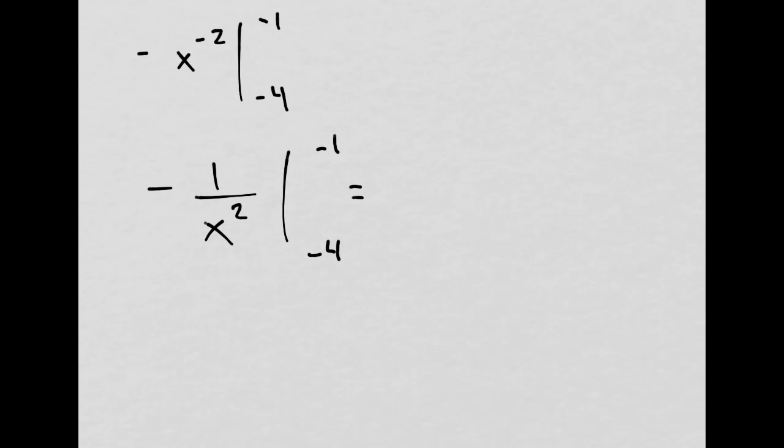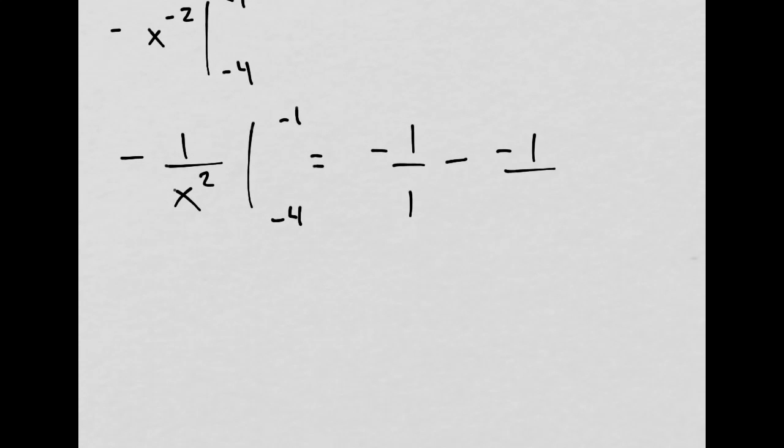Then I evaluate by plugging in that negative 1. The negative 1 gets squared and I just have negative 1 over 1 minus negative 1 over positive 16.